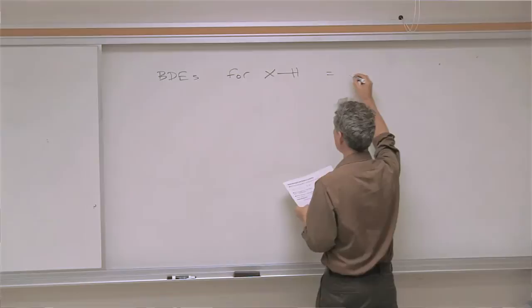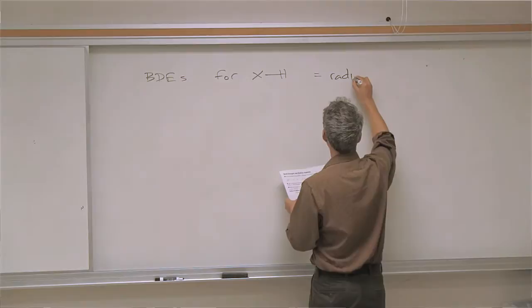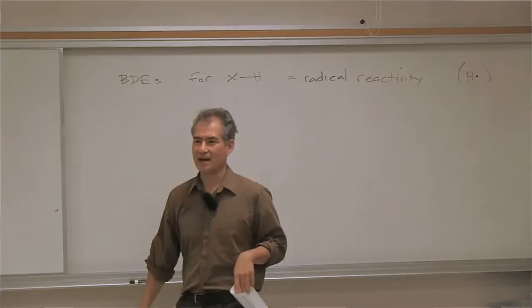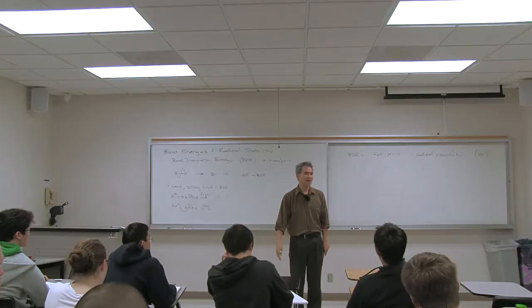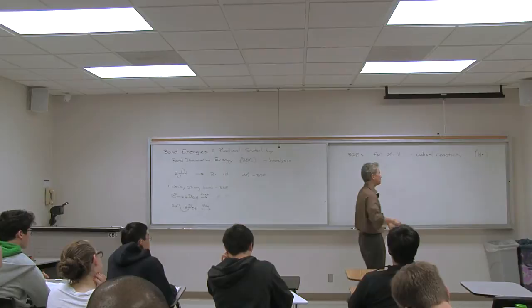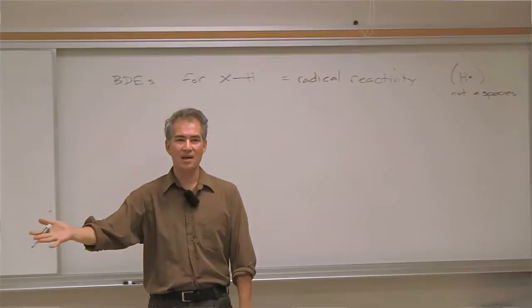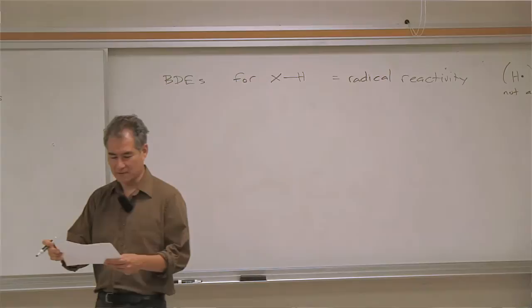Whether X is an ethyl group or a hydroxyl group doesn't matter, because the other side of the equation is always H-dot, and you can subtract out the instability of an H-dot radical. You are never going to find any kind of process in organic chemistry where H-dot is floating around in your reaction — there is no such real process. You can abstract an H-dot group, but H-dot by itself is not a real species. It's a hypothetical process — like it only exists in the center of the sun where the temperature is a billion degrees.